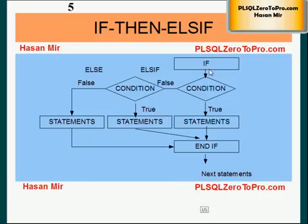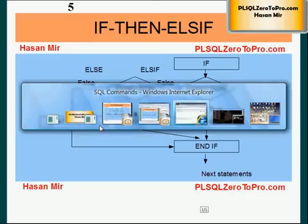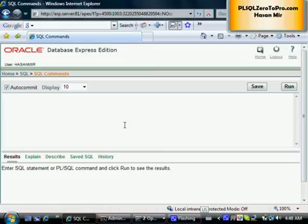This is a flowchart of if-then-elsif conditional control. The if states the starting of the if clause. If condition 1 is true, then all these statements would be executed. If condition 1 is not true, then condition 2 would be evaluated — only if condition 1 is false. If condition 2 is true, then all these statements would be executed; otherwise, the else statements will be executed. Let's do some practical examples of if-then-elsif control.